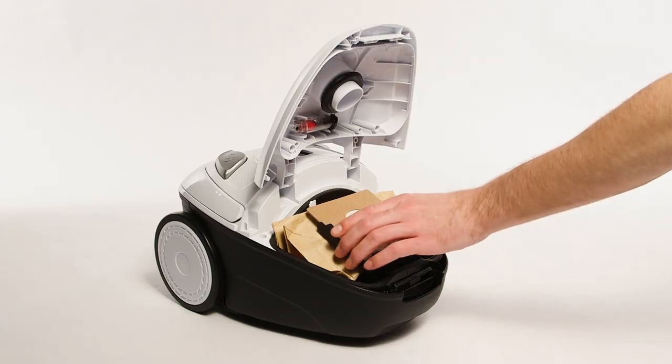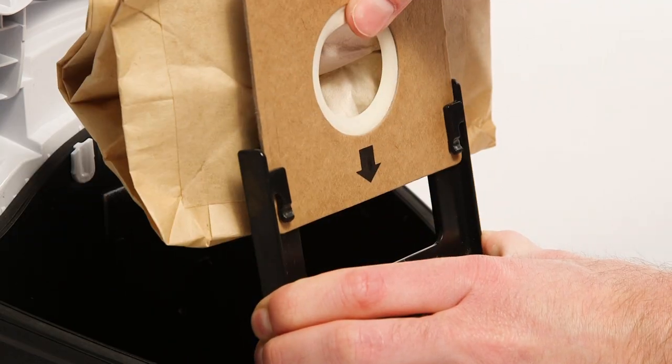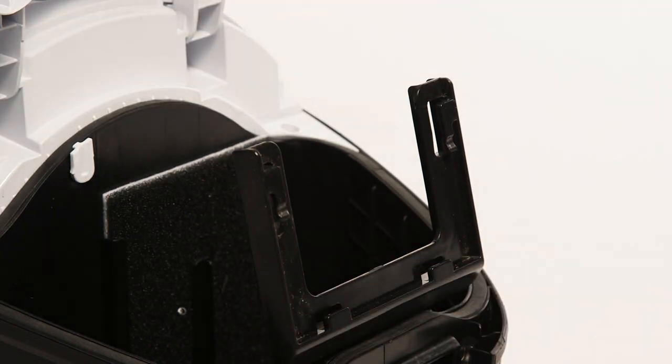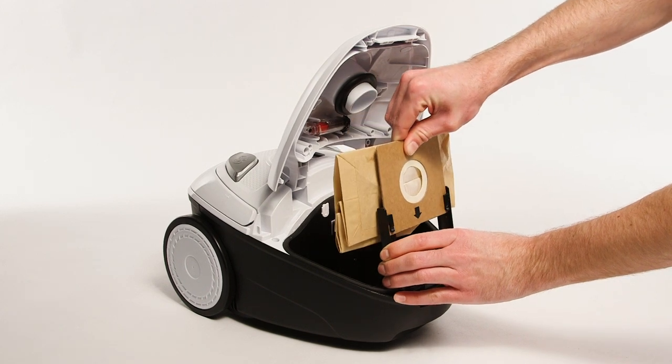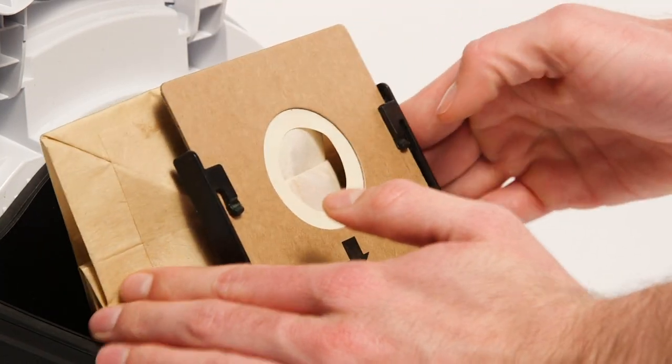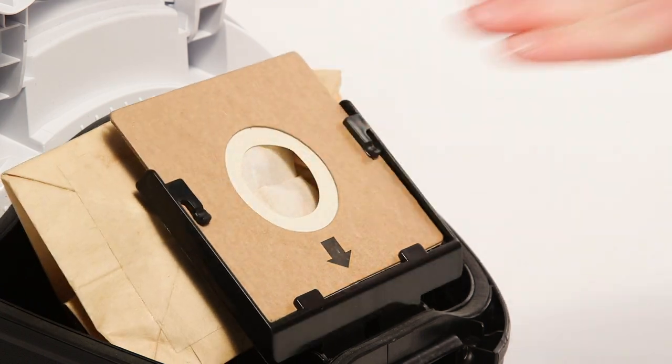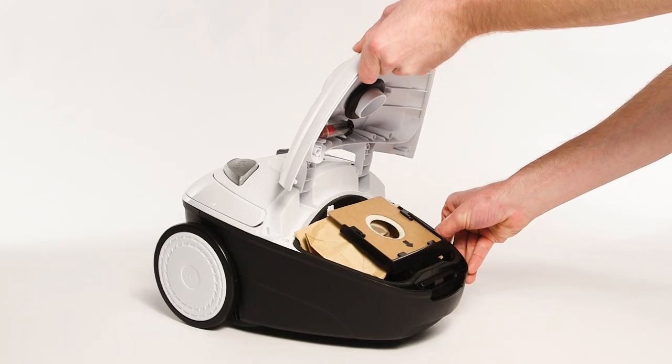Slide the dust bag out of the frame and remove the dust bag from the dust bag compartment. Next, fit a new bag into the cavity. The edge marked with a black arrow fits into the slot in the base of the cavity. You can now close the lid.